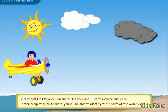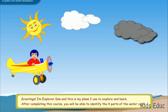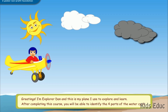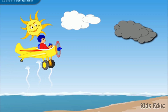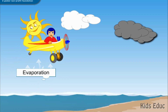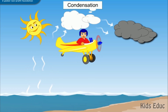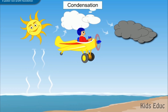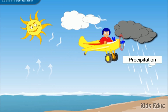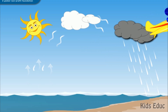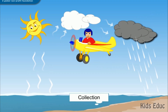After completing this course, you will be able to identify the four parts of the water cycle. They are evaporation, condensation, precipitation, and collection.